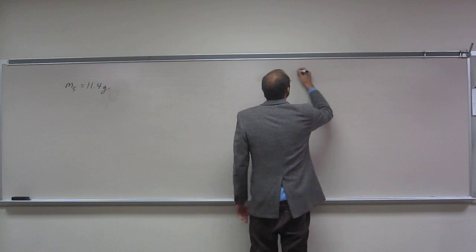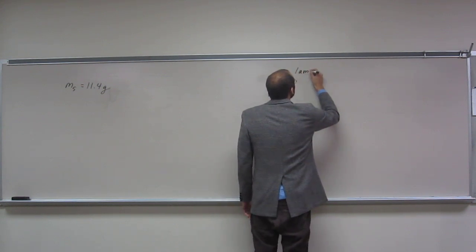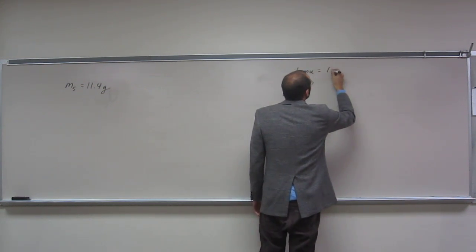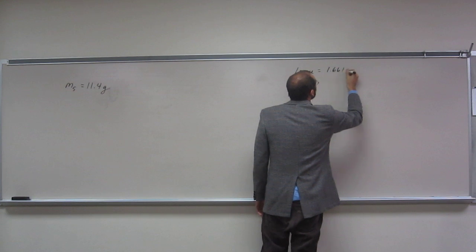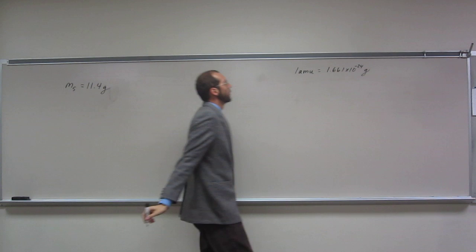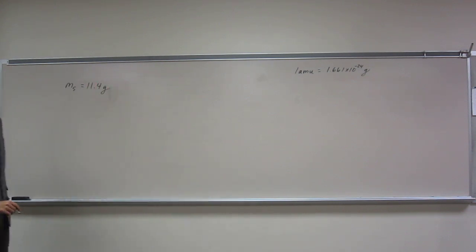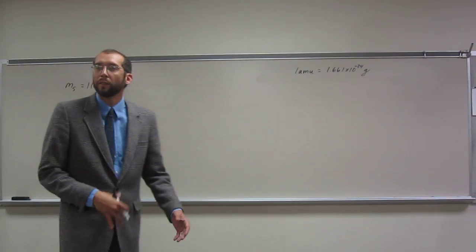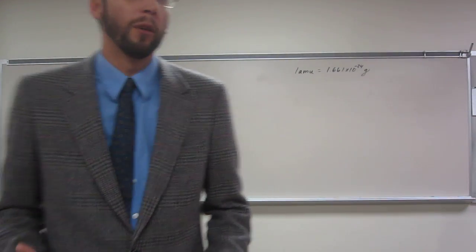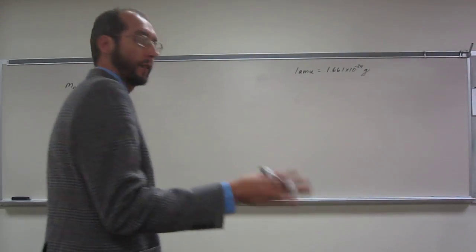So if you recall, one atomic mass unit equals 1.661 times 10 to the negative 24 grams. So really all this is is kind of a conversion problem. It just sounds a little scary.